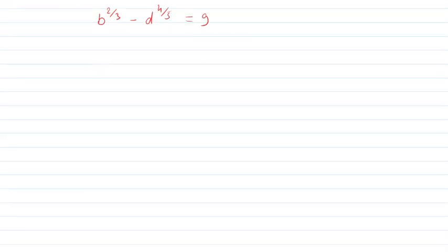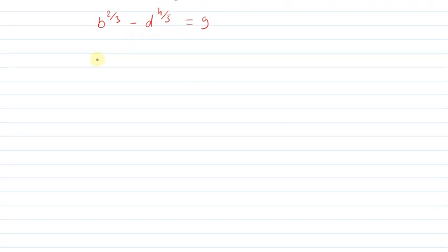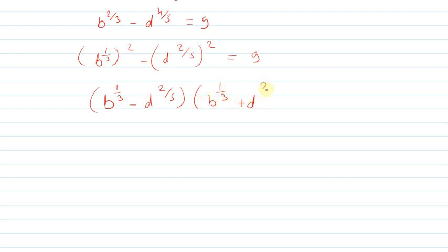What is the next step? This is b power 1/3 times b power 1/3 minus d power 2/5 times d power 2/5. So we can factor this as (b^(1/3) - d^(2/5))(b^(1/3) + d^(2/5)) = 9.